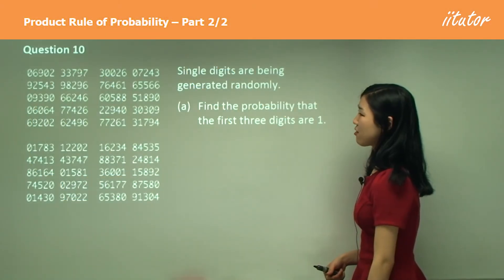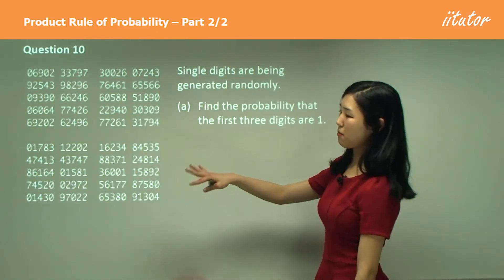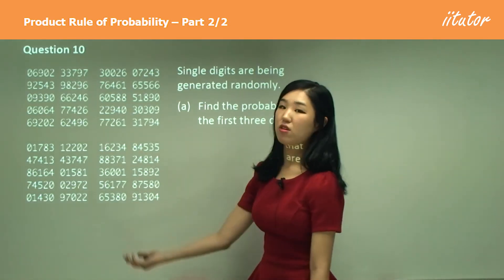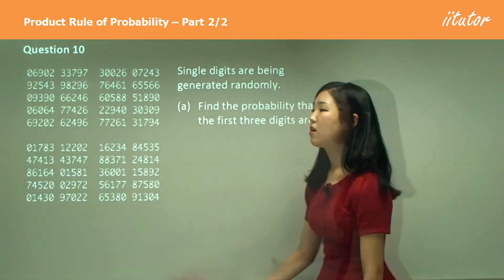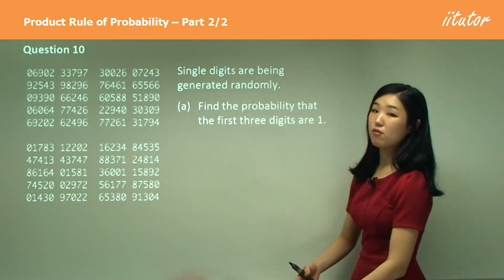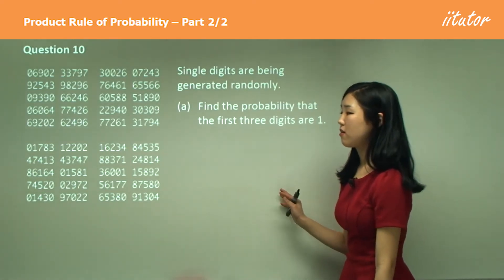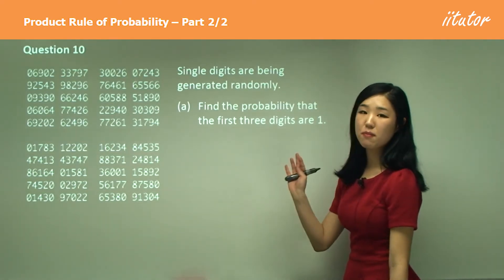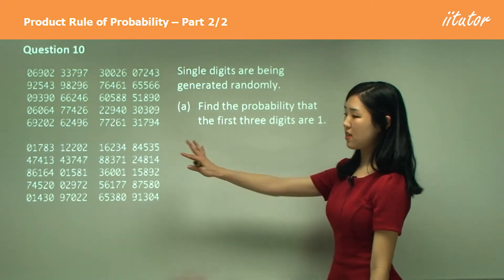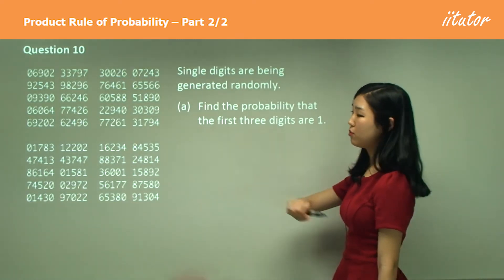Single digits are being generated randomly, so like these kind of numbers. It doesn't have to be a five-digit number, but these are the kinds of things randomly generated. It can be any random number — it can be repeated, there's no limit to this. These are just examples.